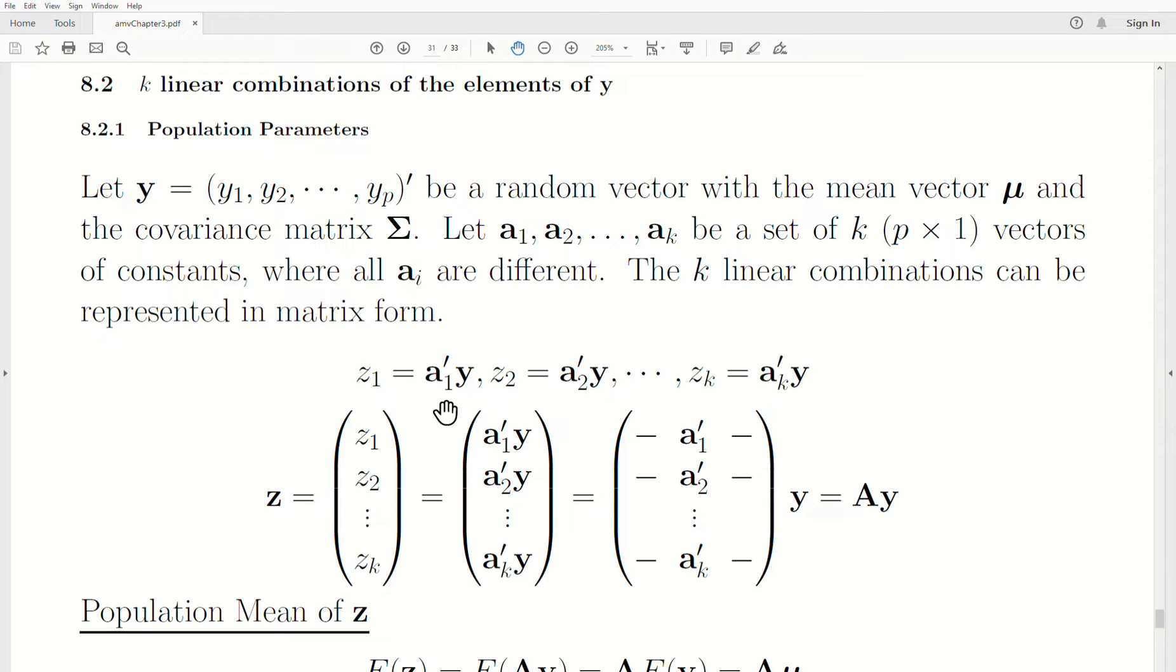The k linear combinations can be represented in a matrix form. First, let's look at them in scalar form. So let z1 be the vector product of a1 transpose y. This creates that random variable z1. Then we do it again, a2 transpose times y, we get z2, all the way to zk, which is equal to ak transpose y. But if we put the z's in a vector, we now have a k by one random vector. We replace what the z's were, then we can factor out a y. This is a matrix where each row is the vector of constants, and it can be generically thought of as A times y.